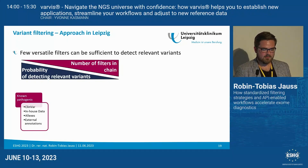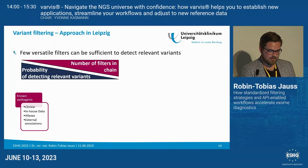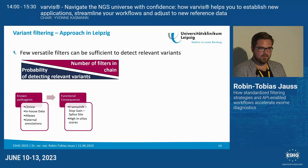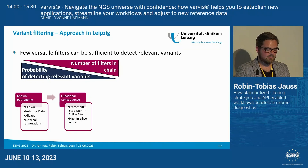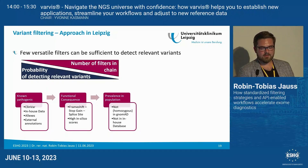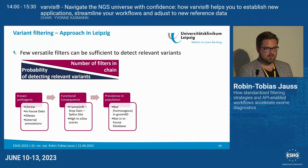Our filtering chain in Leipzig consists of specific steps. First, we look at pathogenic variants based on resources like ClinVar, our in-house database, or other external annotations from Varvis. If this is unremarkable, we look at functional consequences — particularly frameshift, stop-gain, splice variants, or missense variants with very high in silico prediction scores. Then, if still unremarkable, we take into consideration prevalence in the general population, looking at variants absent or very rare in gnomAD, and also absent from our in-house database.